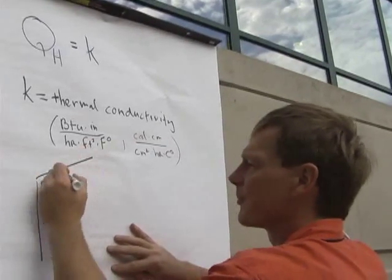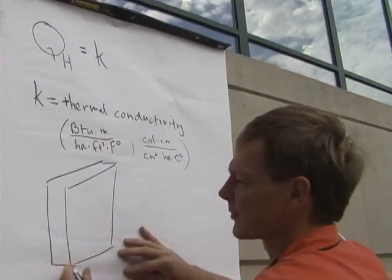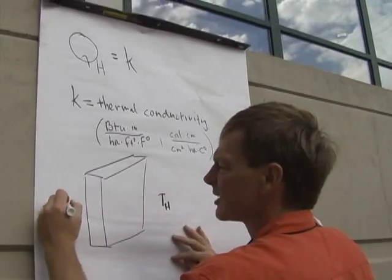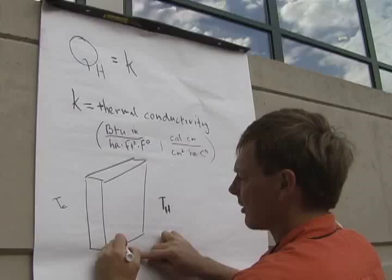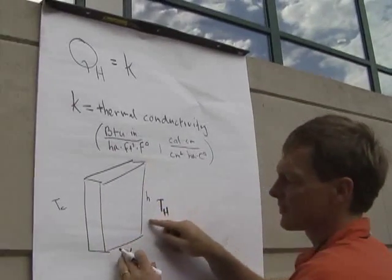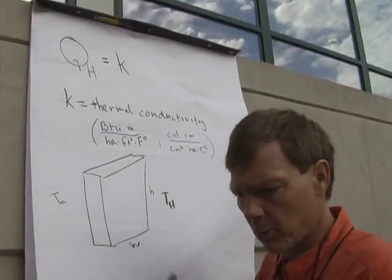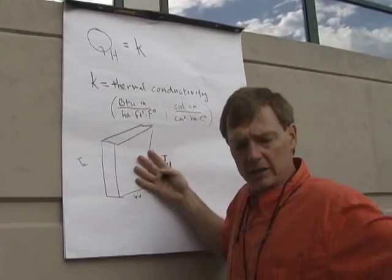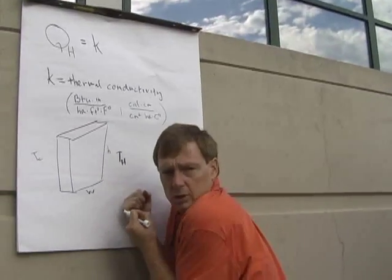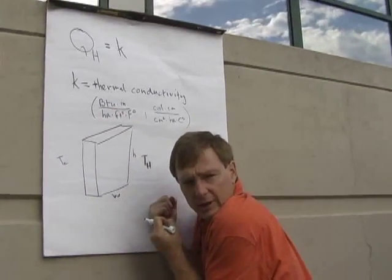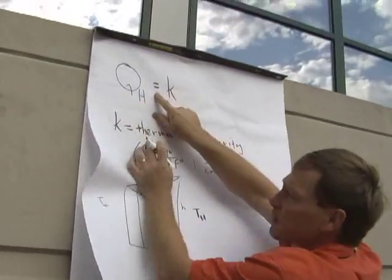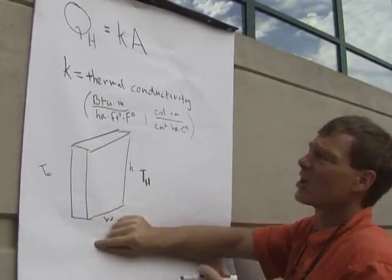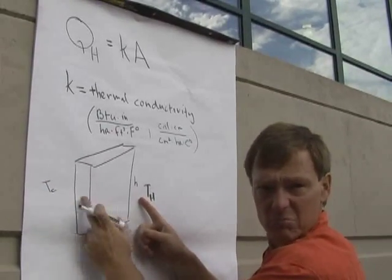Now, looking at the wall: the more area the wall has — with a hot side T-hot and a cold side T-cold, with some width and height — the bigger the surface area, the more heat is going to escape or be absorbed. So heat transfer rate is directly proportional to surface area. If you're hot, you spread out to cool; if you're cold, you cover up, reducing surface area to reduce heat transfer rate.